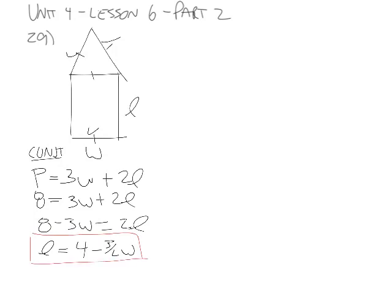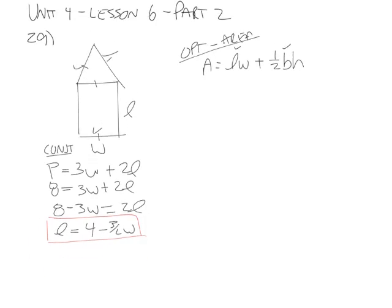So we're trying to optimize area because we want the most light. So what is the area for this equation, or this shape? Well it's going to be length times width plus 1 half base times height. So we have our length already. Now we've got to find our base and height. Well the base we know, because our base is going to be just the W.